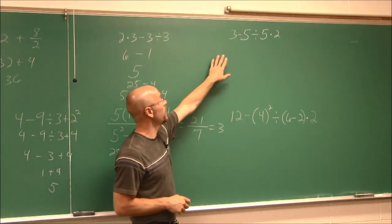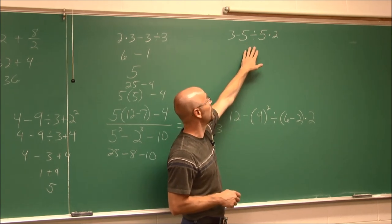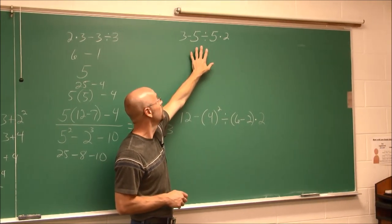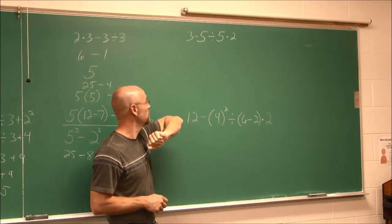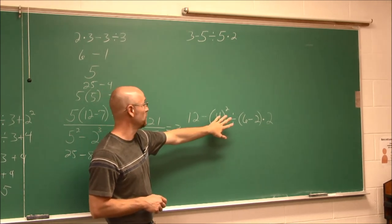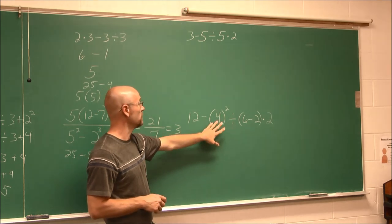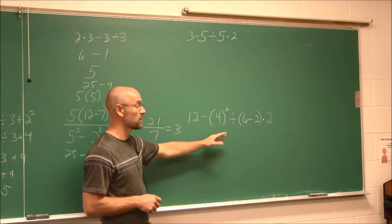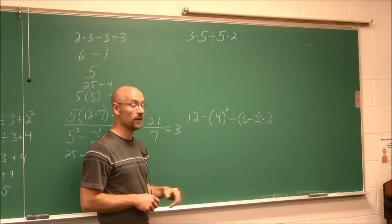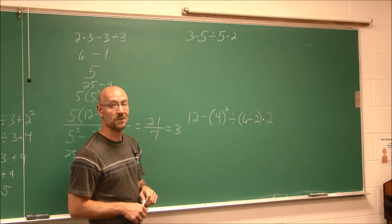Now we have two examples for you to try. The first is 3 minus 5 divided by 5 times 2 — use order of operations. The second has exponents and parentheses: work within the parentheses, do the exponents, then follow the order of operations. Attempt these on your own. Thank you for watching.